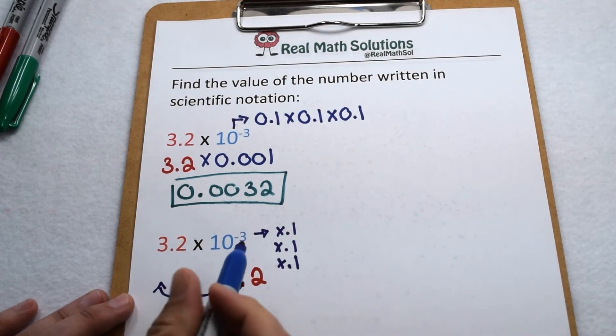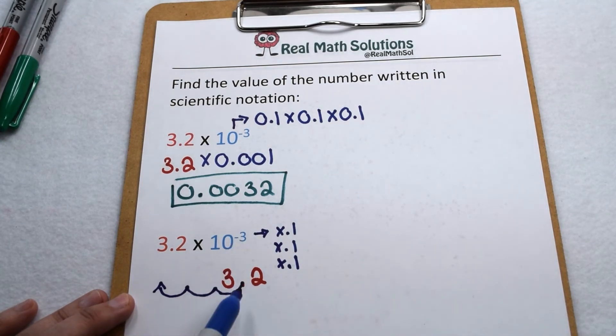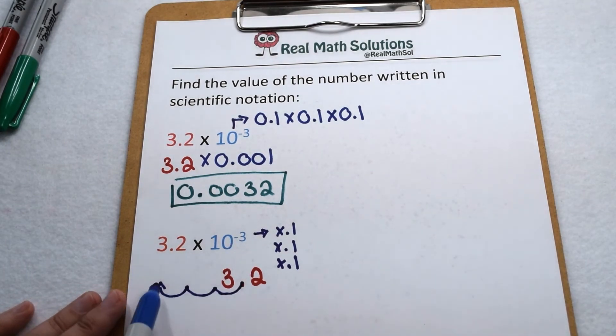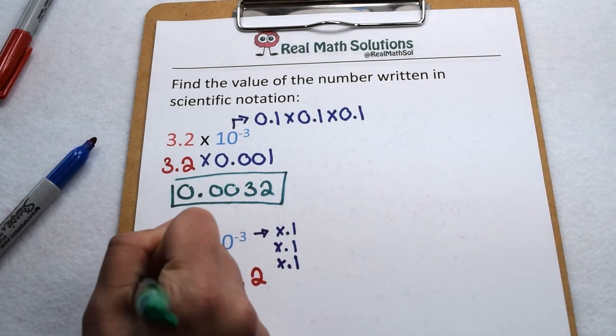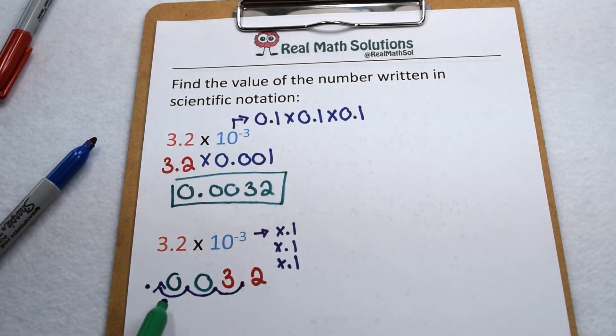So that means we could take our decimal and move it that number of times. 1, 2, 3. Because we have an exponent to the third power we move our decimal three places to the left. Then we could fill in our remaining place values with zeros. When we do that again we come out with the value 0.0032.